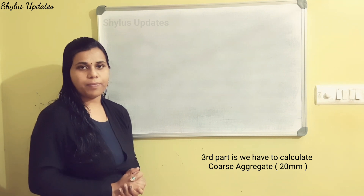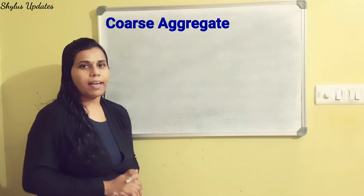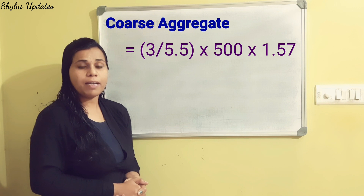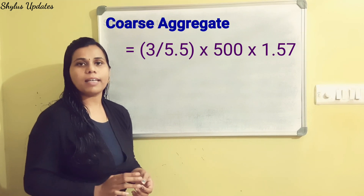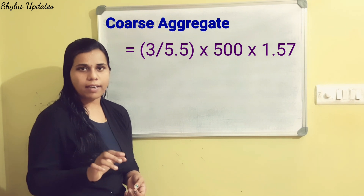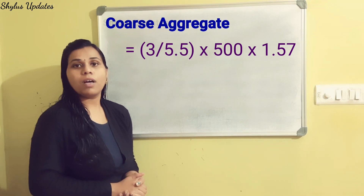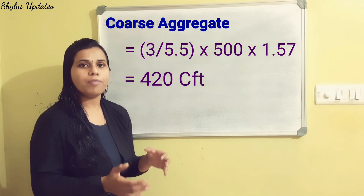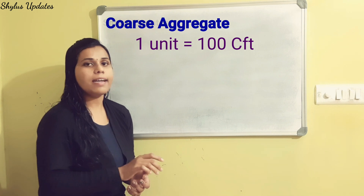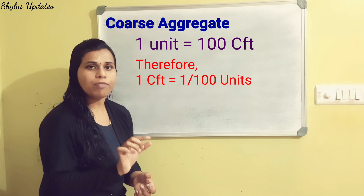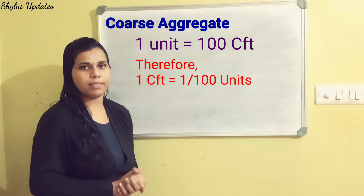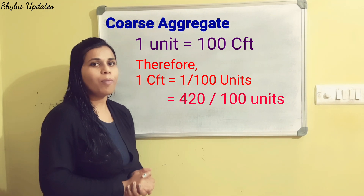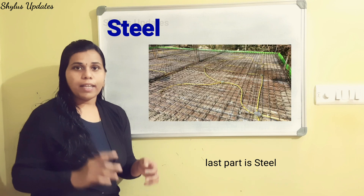The third part is calculating coarse aggregate, i.e. 20mm aggregate. Coarse aggregate = (3 ÷ 5.5) × 500 × 1.57. When we multiply this, we get 420 cubic feet. Converting to units: 420 ÷ 100 = 4.2 units. Therefore, we get 4.2 units of coarse aggregate.